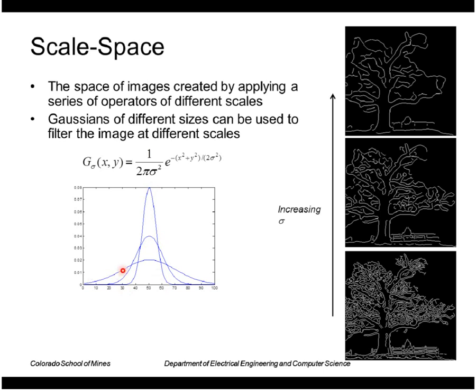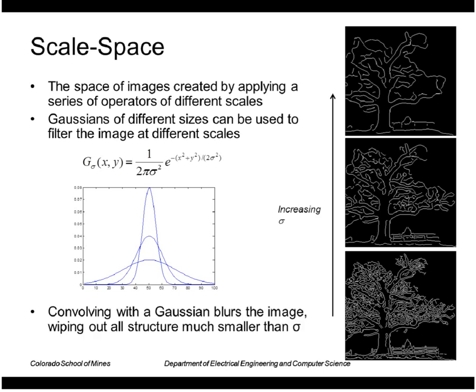If we increase sigma, the Gaussian gets bigger. These are edges produced by a Gaussian based operator. And as we increase sigma, we essentially only detect large structures. We essentially wipe out all structures much smaller than sigma.